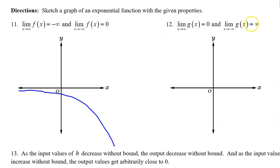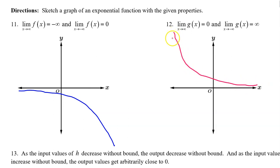For number twelve, let's do the infinity first, because that will sort of automatically take care of the zero. This says that the limit as x approaches negative infinity of g of x is infinity. That means that on the left, g of x should be rising. So as an exponential function, that would happen like this — rising on the left. Then incidentally, the limit as x approaches infinity of g of x is equal to zero. Sure enough, as we head towards the right, g of x is approaching zero.